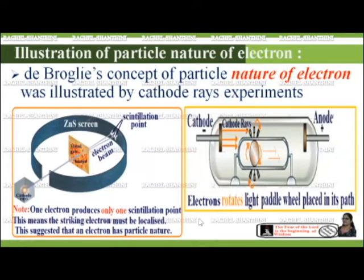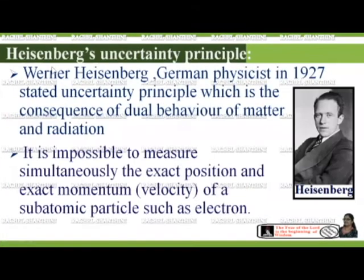From the Davisson-Germer experiment and the cathode ray experiments, it is very clear that electrons possess dual nature — both wave character and particle character. The next important concept is Heisenberg's uncertainty principle.